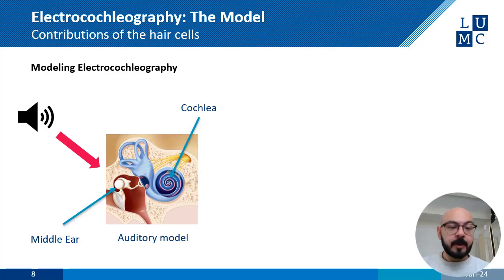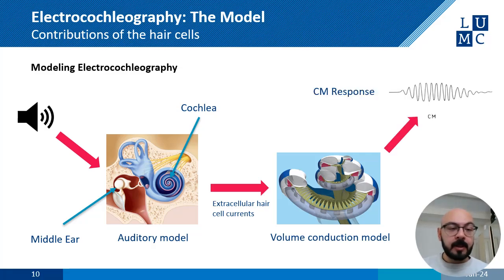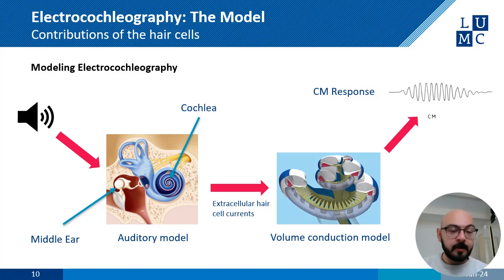The auditory model converts this sound to basilar membrane velocity, which in turn acts as input to the hair cells. From the hair cell model, we extract extracellular currents associated with inner and outer hair cell activity. The extracellular currents are then used as input to our volume conduction model, which shows how currents spread through the electrode in an implanted cochlea. Then, on each electrode, the responses from all hair cells are combined and the ECoG response is calculated. We use the cochlear microphonic potential to calculate the amplitude at each electrode of the cochlear implant.